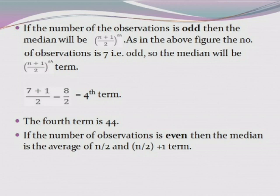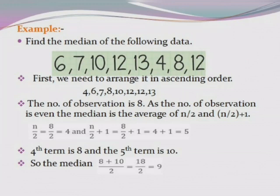If the number of observations is even, then the median is the average of the (n/2)th and the (n/2 + 1)th terms. Now we look at an example of finding the median when the number of observations is even.